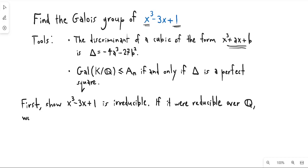So what that means is that in this case we would have that ±1 is a root, because the only factors of the constant term are plus and minus 1. But if you plug either ±1 into this polynomial you get that it is not equal to 0.